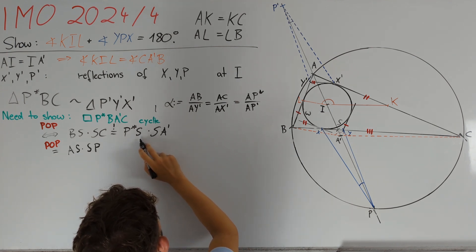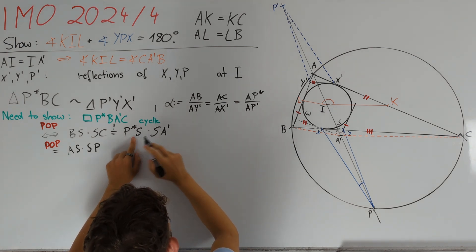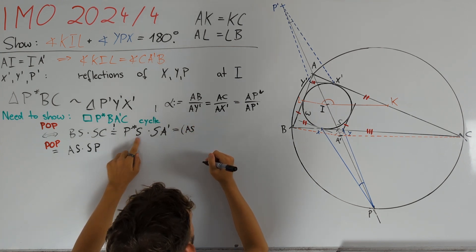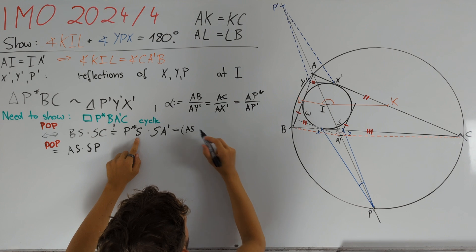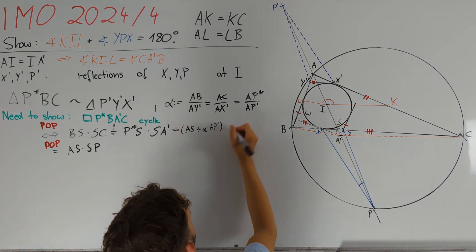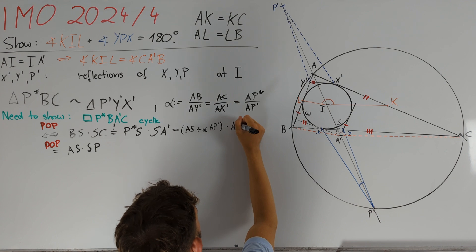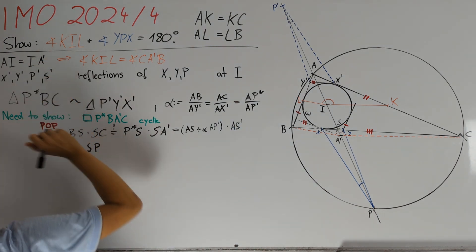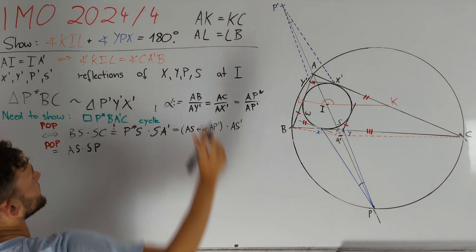On the right side, we first want to get rid of P star. So, we first notice that P star S is equal to AS plus P star A, but P star A is nothing but alpha times AP prime. For SA prime, we can also write AS prime, where S prime is the reflection of S at I.